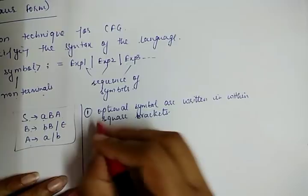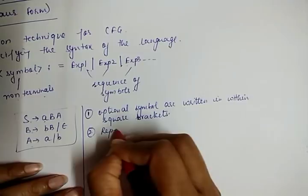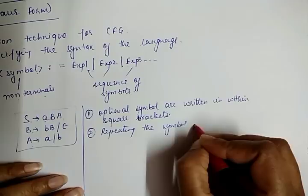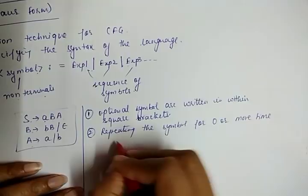Second, for repeating the symbol for 0 or more times, we can represent it by asterisk.